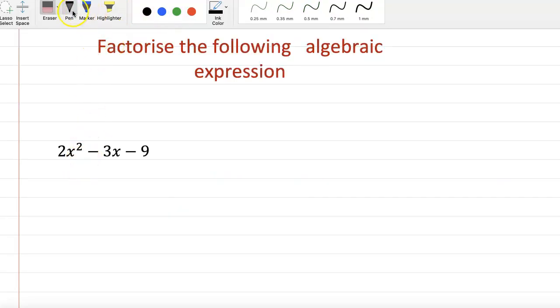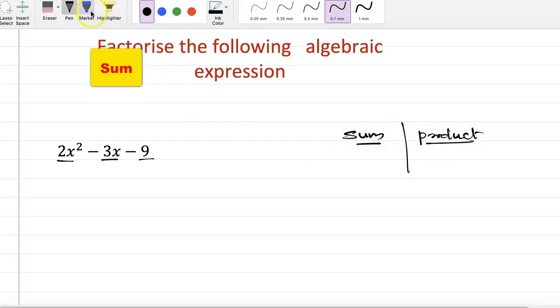Let's see the next example: 2x squared minus 3x minus 9. Sum and product: sum is minus 3.